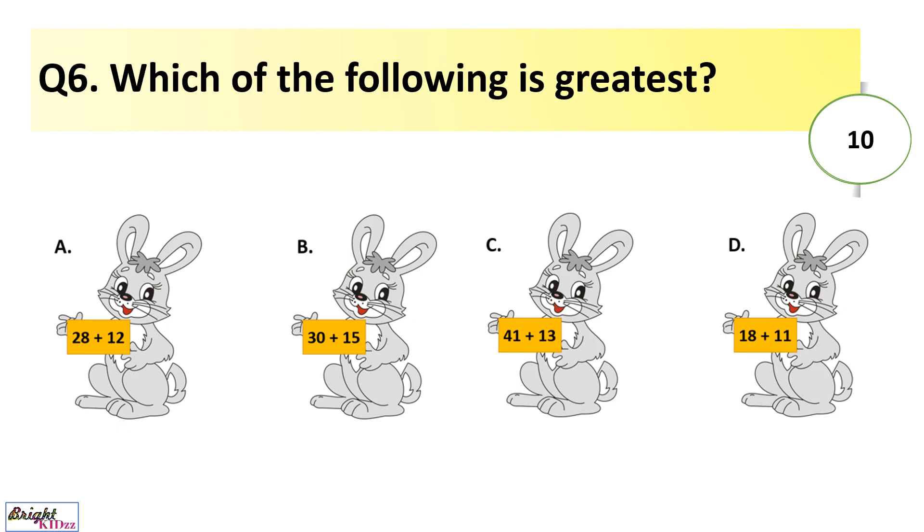Which of the following is the greatest? Option A addition makes 40. Here this one makes 45, this one makes 55, this one makes 54, and this one is 29. So option C is the greatest.